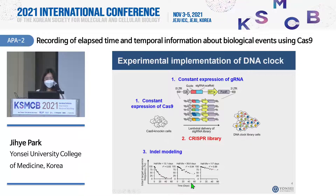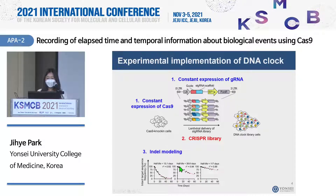Here are the indel frequency results for three representative target sequences. The x-axis is time and the y-axis is the indel frequency in the target sequence. At time zero, 100% of target sequences are intact, and as time goes by it decreases. The red dotted lines represent the exponential decay model that was statistically analyzed, and we found this was the best-fitting model to our indel frequency data.